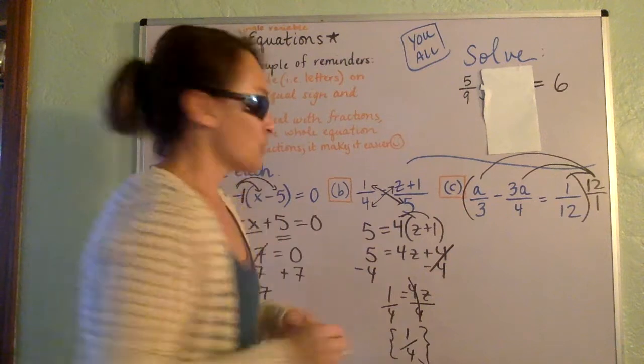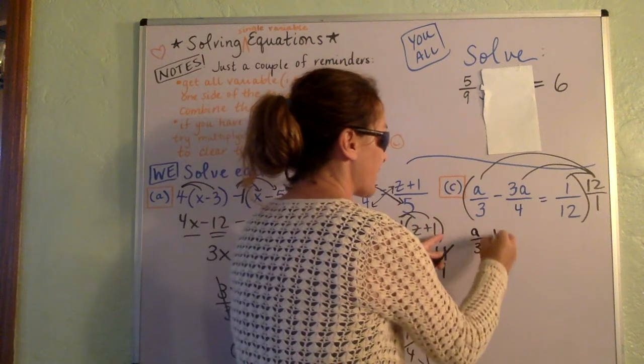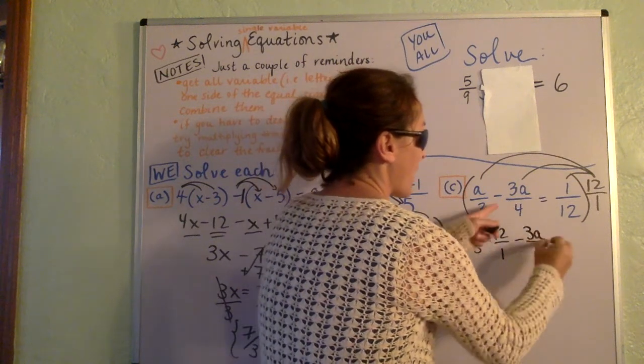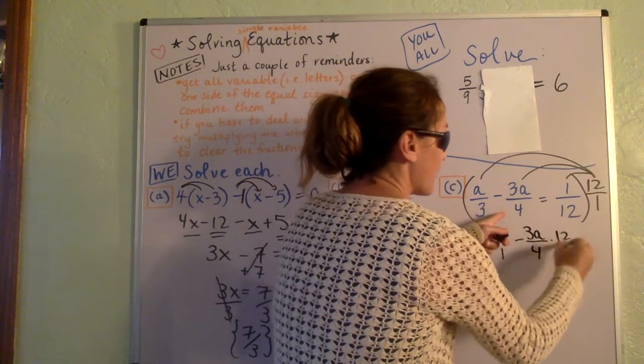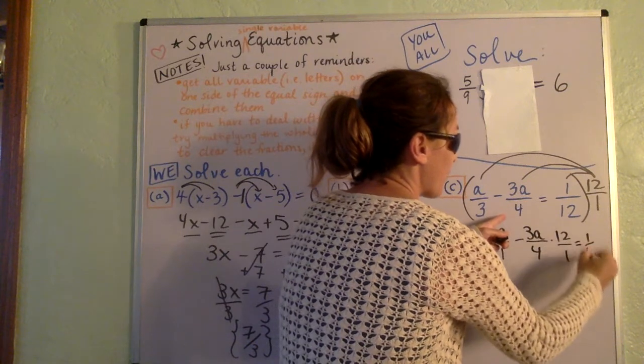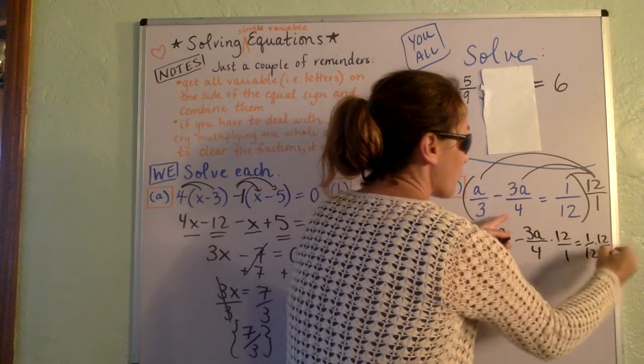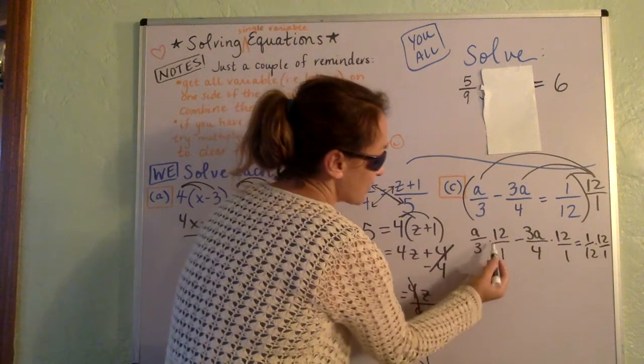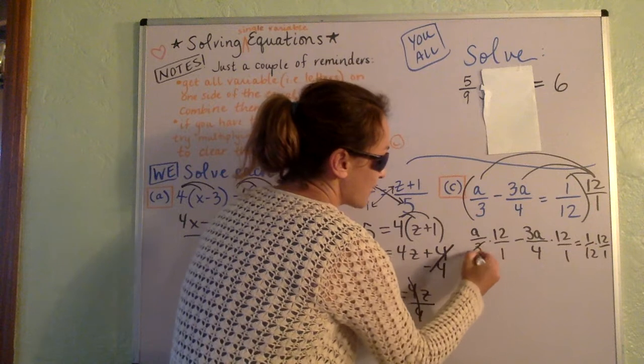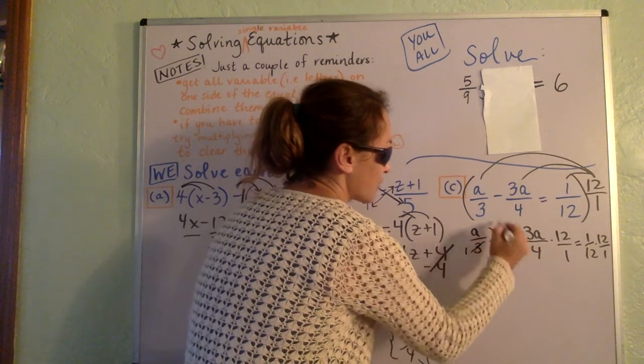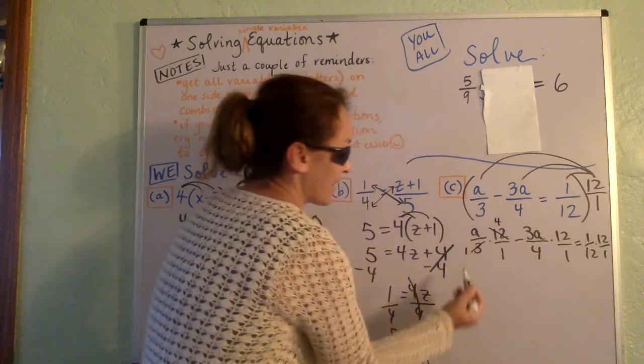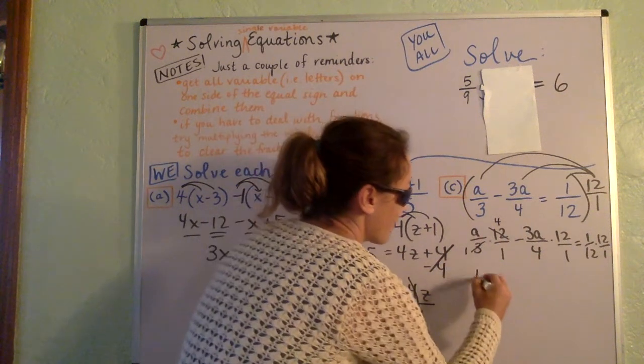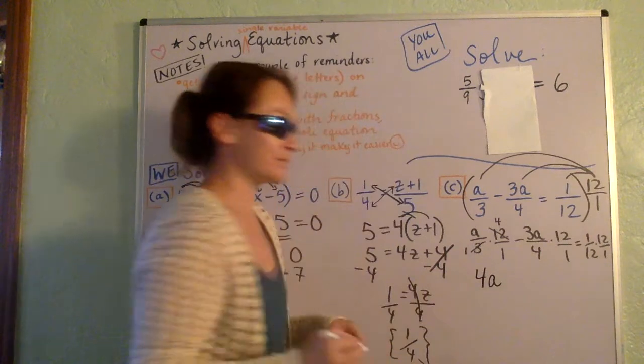So you have a over 3 times 12 over 1 minus 3a over 4 times 12 over 1 equals 1 over 12 times 12 over 1. So now let's just clean all these up. So a over 3 times 12 over 1. 3 goes into itself once, and it goes into 12 4 times. And so this front term actually becomes a 4 times an a, or a 4a.